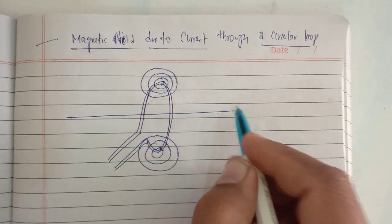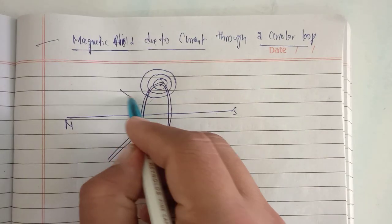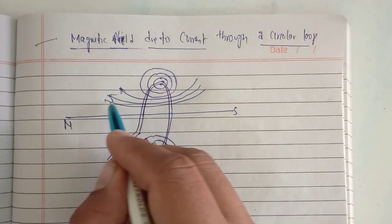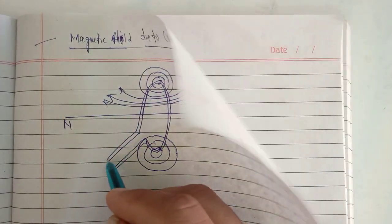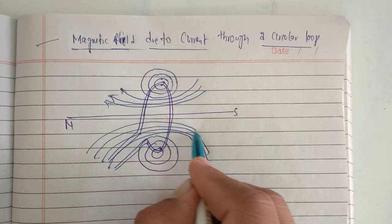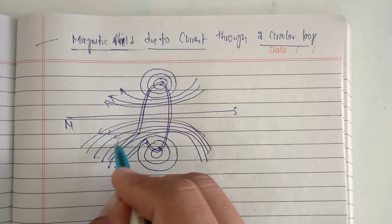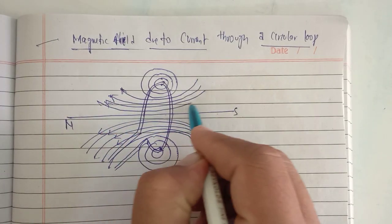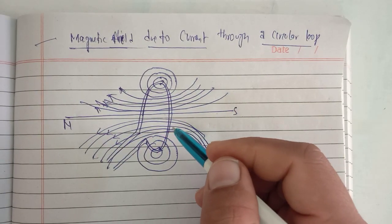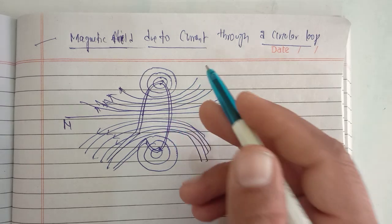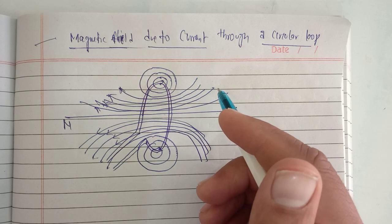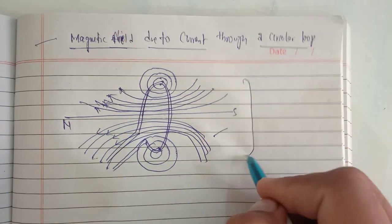Here is south, here is north. These are the magnetic field lines which are present above the surface, and here are the magnetic field lines which are there in the down surface. In this way, the magnetic field lines due to current through a circular loop are shown. The magnetic field due to a circular coil is shown in this figure.